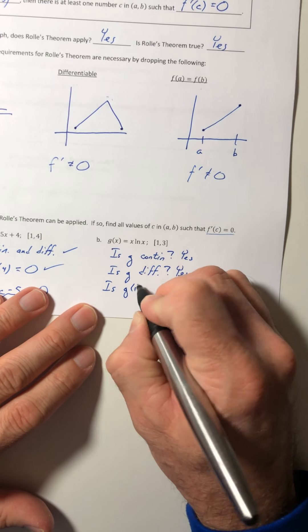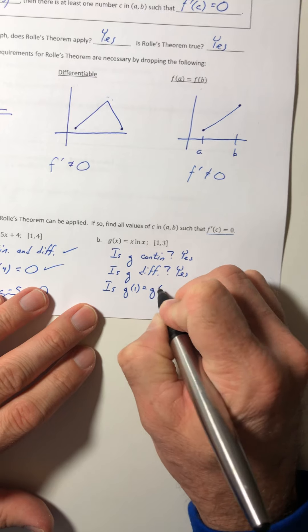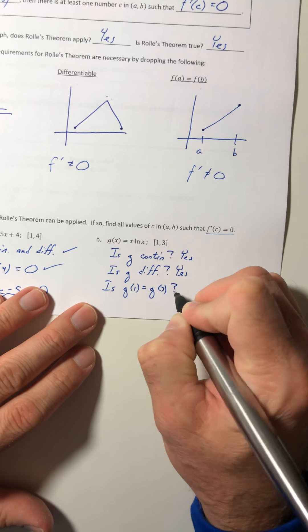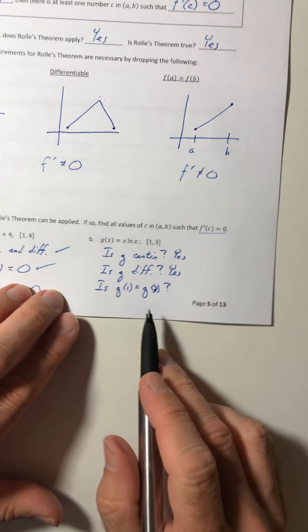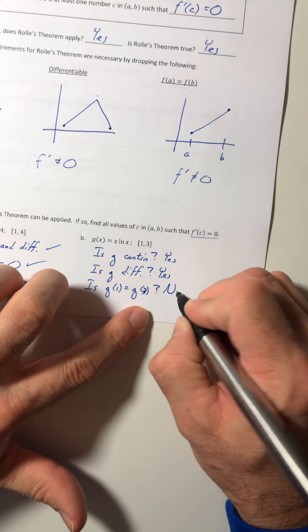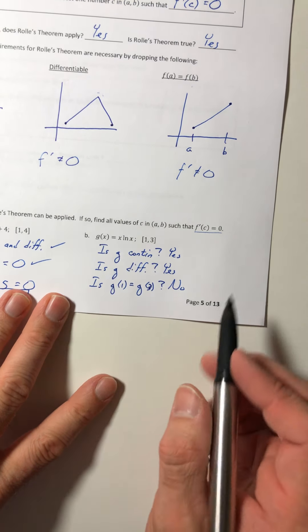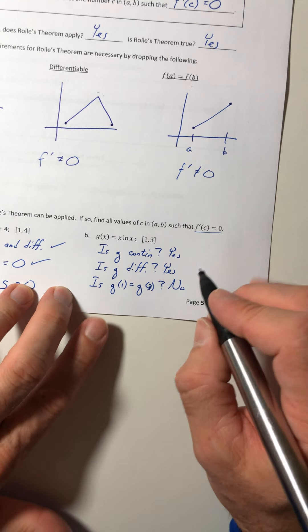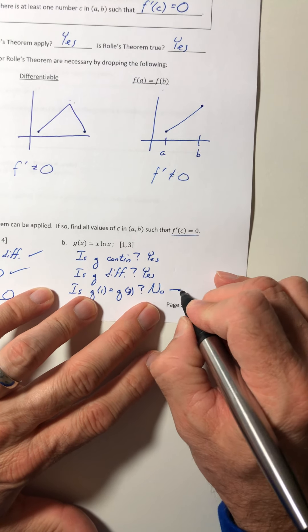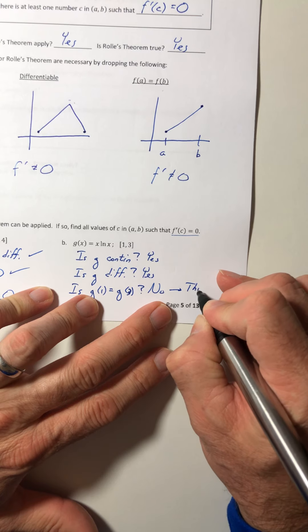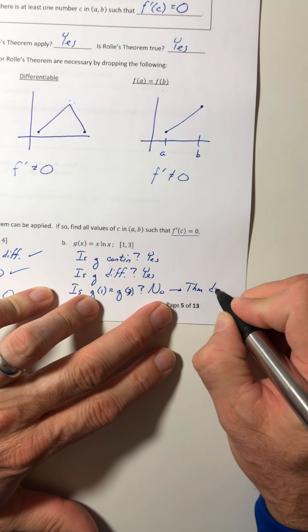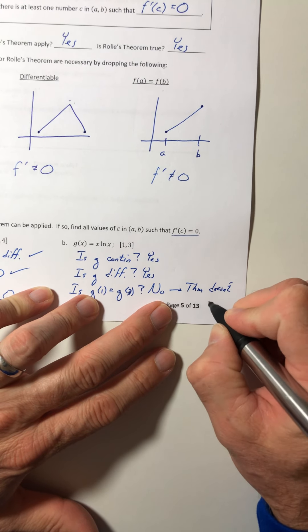And then the third question is, G(1) equals G(3). Well, that one is no. G(1) is 0. G(3) is 3 ln(3). Those are not the same value. So the theorem doesn't apply.